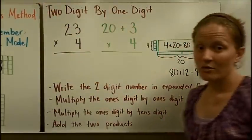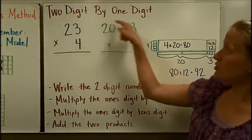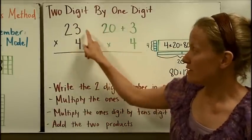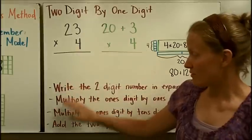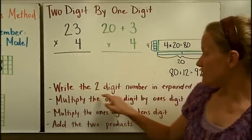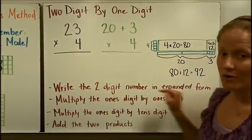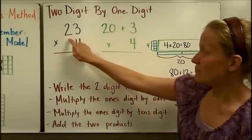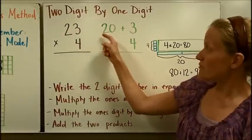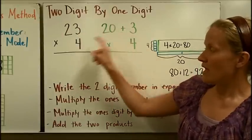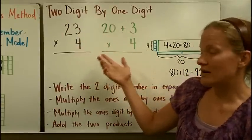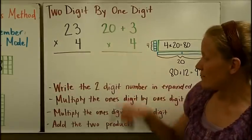So we're going to start by showing the partial products method on a two-by-one digit problem. I have the problem twenty-three times four, and we're going to follow these steps. We're going to write the two-digit number in expanded form — I took twenty-three and broke it into the tens piece and the ones piece, so twenty-three is twenty plus three. And then we keep the single digit four as it is.